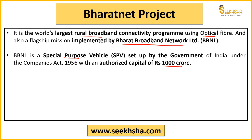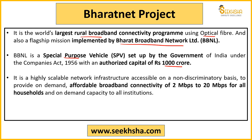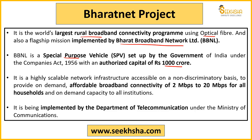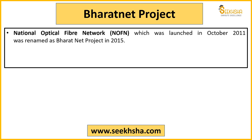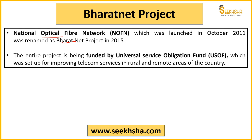Companies Act 1956 ke andar, iski 1000 crore ki authorized value hai. Internet non-discriminatory basis ke upar provide kiya jayega — koi bhi discrimination nahi ki jayegi internet connectivity provide karte hue — aur affordable range ke andar hona chahiye: 2 Mbps se 20 Mbps speed sabhi gharon ko provide karni hai gram panchayat ke andar. Department of Telecommunication iska overall kaam dekhegi. Bharat Net Project ka 2015 se pehle naam tha National Optical Fiber Network (NOFN) project, tab naam change karke Bharat Net kiya gaya.